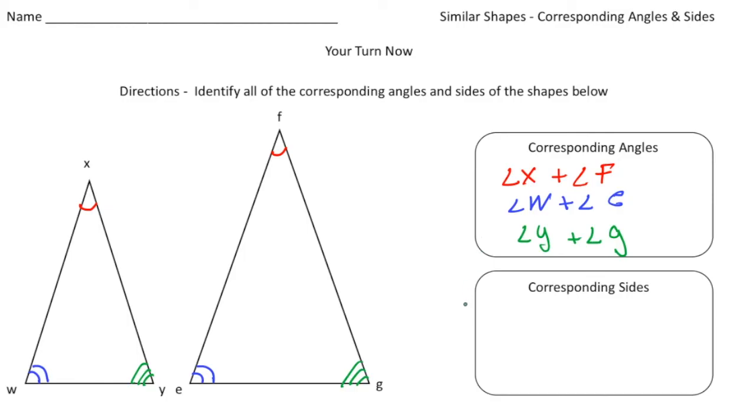Alright, now let's go with the corresponding sides. And because we've kind of already identified the corresponding angles, it's pretty easy to see. So here we know that X, W, right? So we're going from green to blue. So XW is going to correspond with FE. So side XW and FE are a pair of corresponding sides.